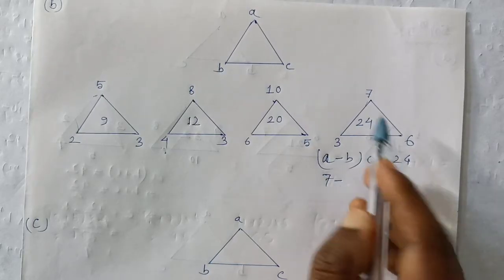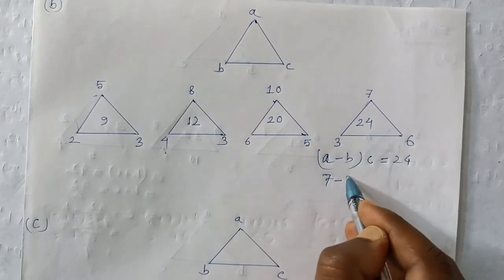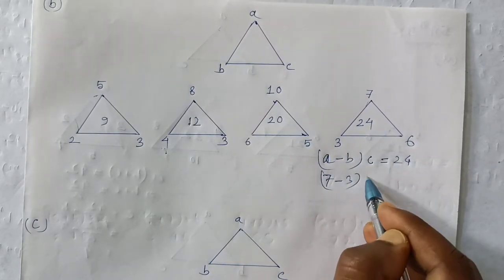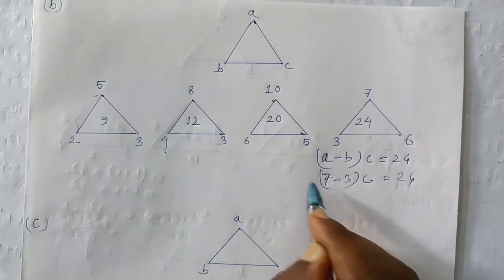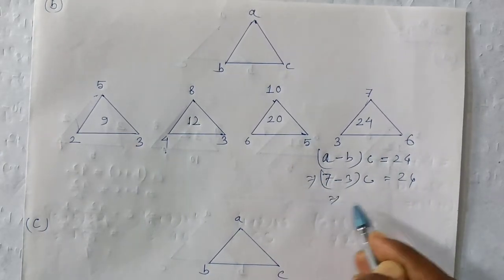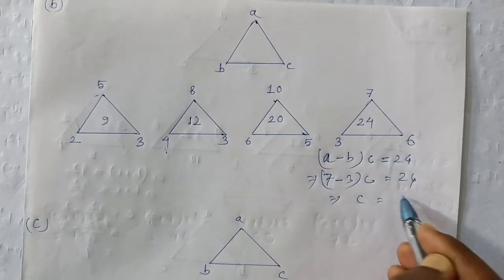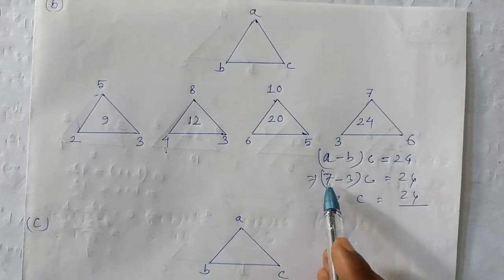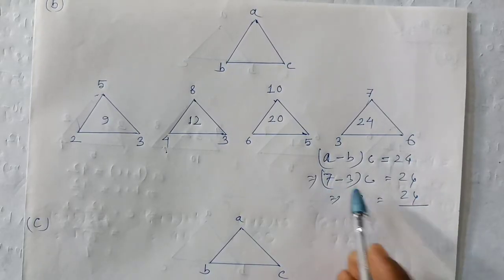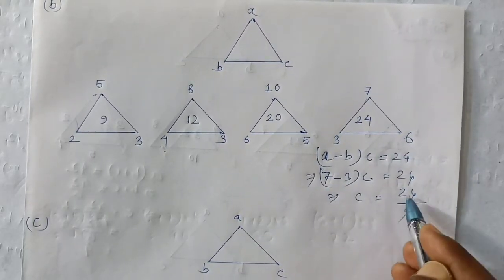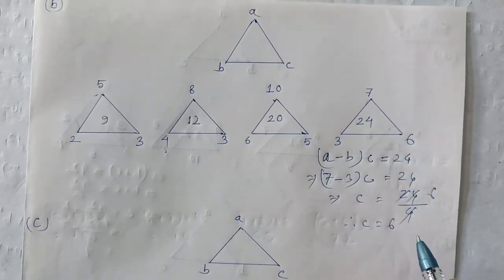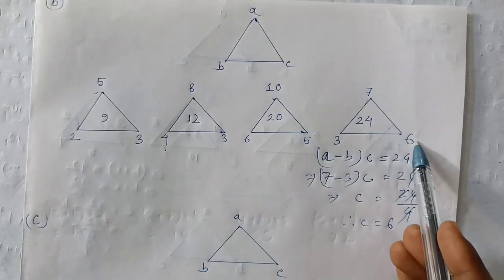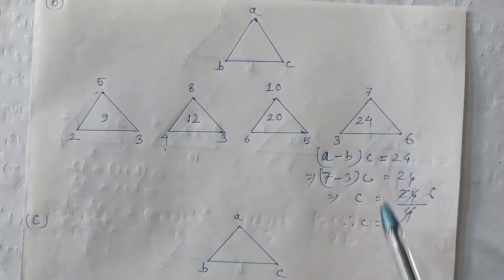Seven days, a seven minus three days, three. c equal to 24. c equal to 24 divided by 8. So c equal to 6.